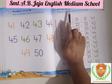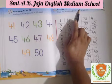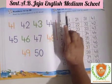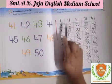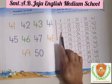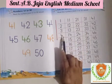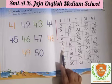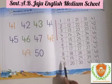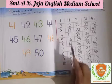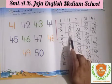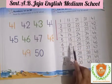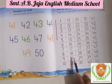Now let us revise 1 to 50 numbers. Read the numbers from 1 to 50 aloud: 1, 2, 3, 4, 5, 6, 7, 8, 9, 10, 11, 12, 13, 14, 15, 16, 17, 18, 19, 20.